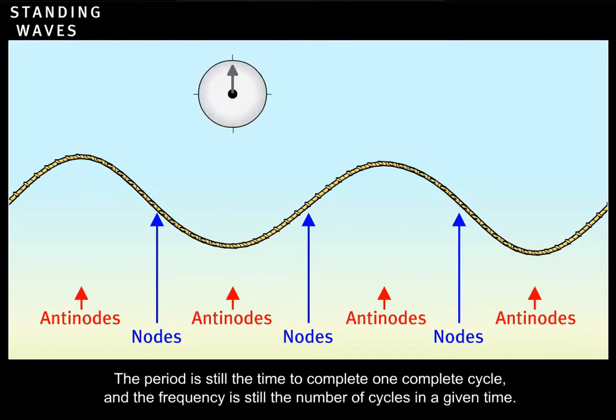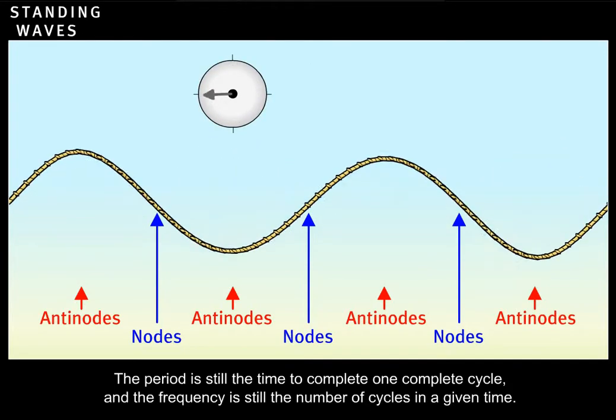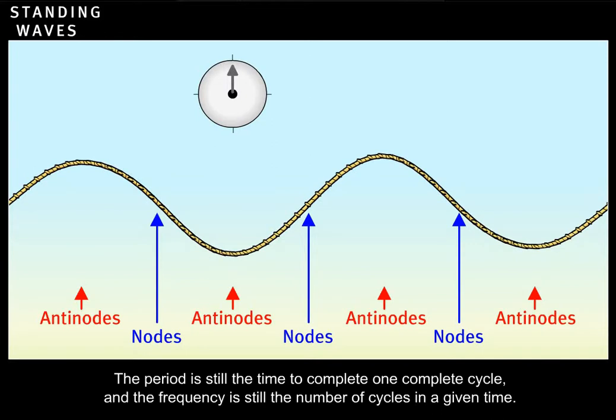The period is still the time to complete one complete cycle, and the frequency is still the number of cycles in a given time.